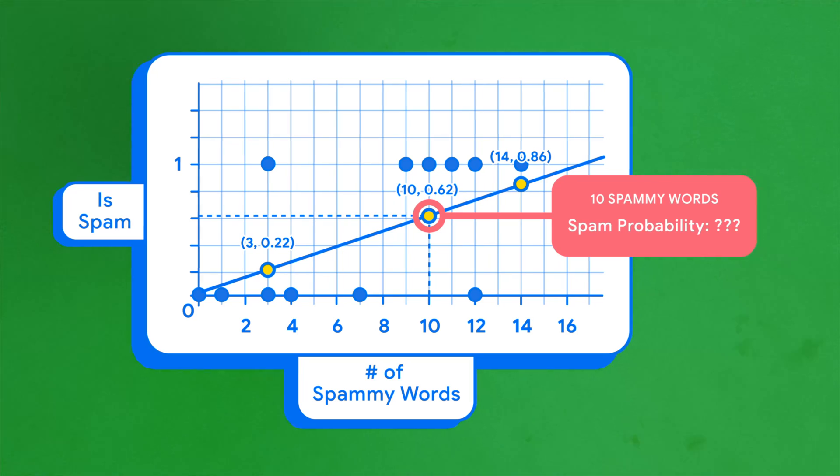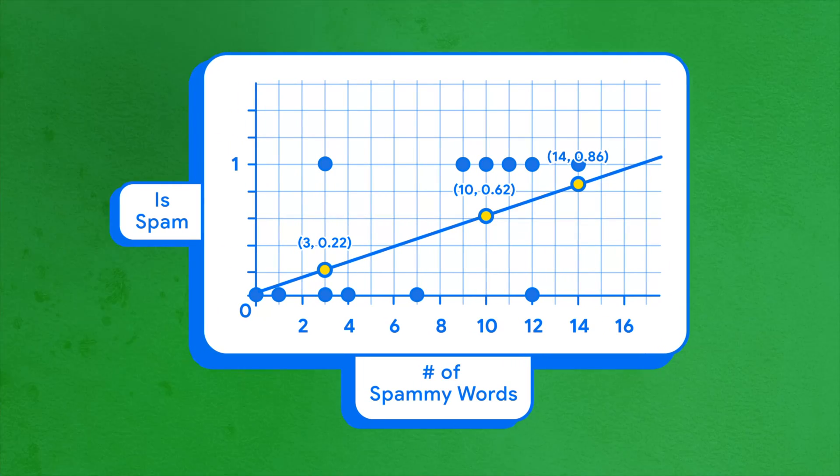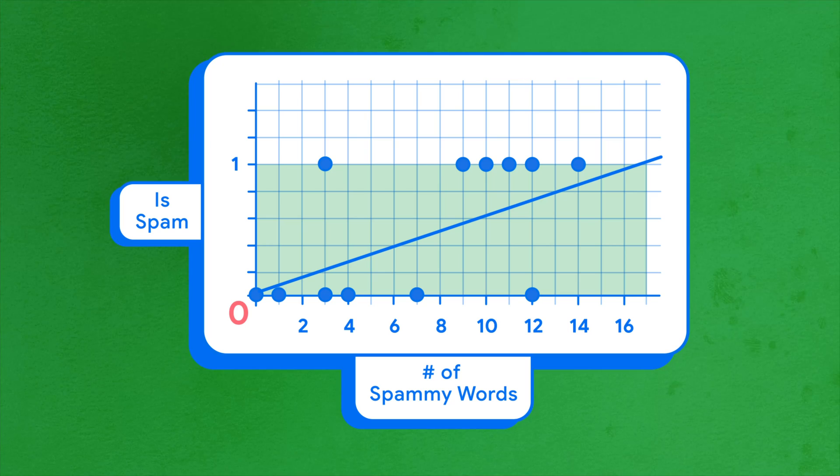We need to transform the model to apply some limits so it outputs continuous values that fall within the range from 0 to 1, where 0 indicates a 0% chance an email is spam, and 1 indicates a 100% chance it's spam. What mathematical function could we use to do this?